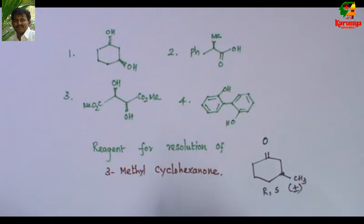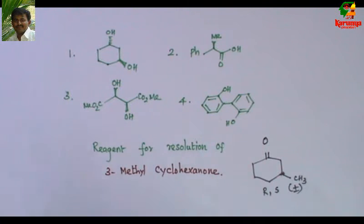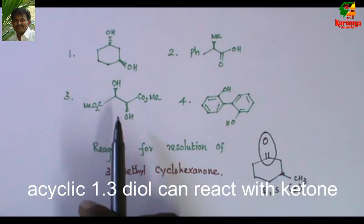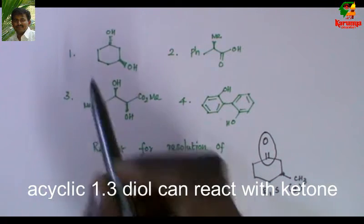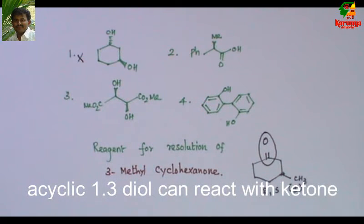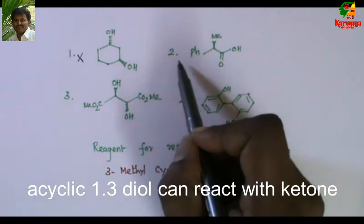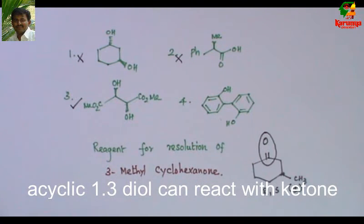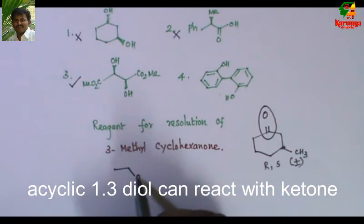The given compound is 3-methylcyclohexanone — the functional group is a ketone. We have to find out which of these reagents will react with a ketone functionality. A 1,3-diol cannot react with a ketone, but a 1,2-diol can react. In fact, a 1,2-diol is the protecting group for a ketone.